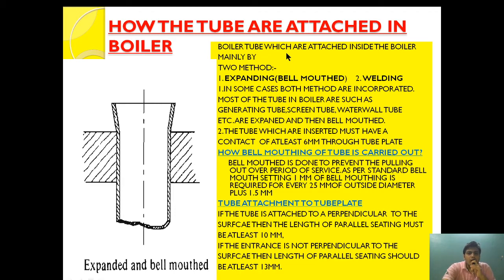Boiler tubes are attached by only two methods: expanding and welding. In expanding, we first expand the tube and then bell mouth it. In some cases both methods are incorporated — for example, in a smoke tube boiler, both bell mouthing/expanding and welding are carried out. Most tubes in the boiler such as generating tubes, screen tubes, and water wall tubes are expanded and then bell mouthed.